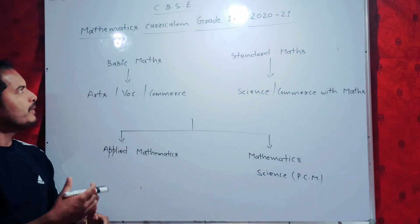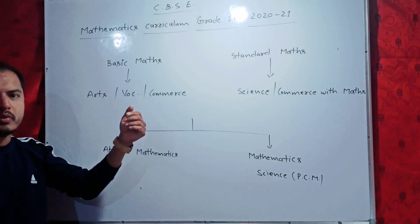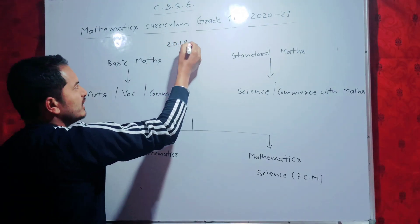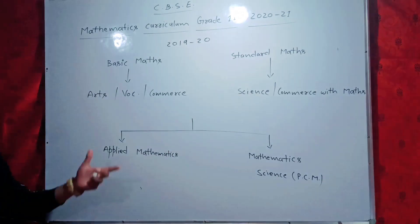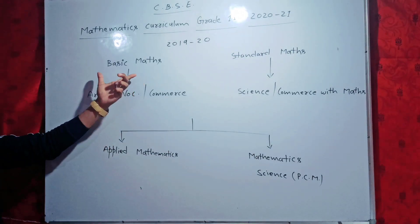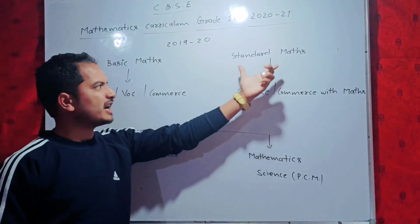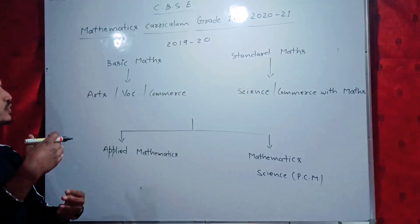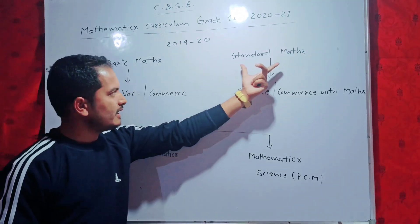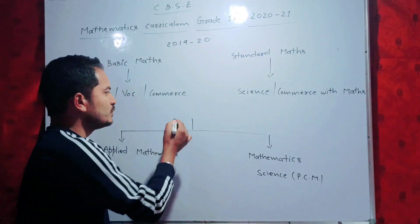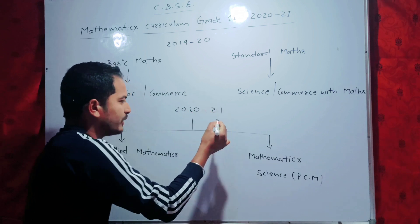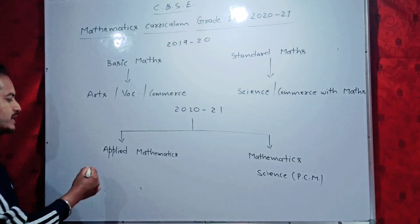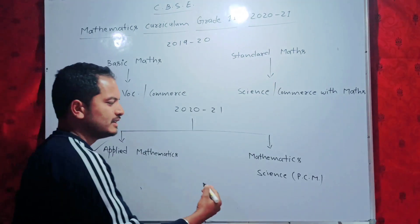CBSE has just revised the syllabus of Class 11th for academic session 2020-21. In this session we will learn about how we can take mathematics for Class 11th. In the academic session of 2019-20, for your board exams you had two choices of mathematics: first one is basic mathematics and second one is standard mathematics. In the academic session of 2020-21 in Class 11th you again have two choices for the selection of mathematics.